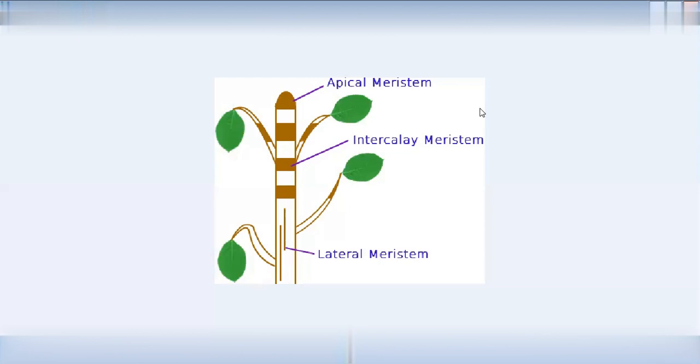The meristematic cells have characteristic features. If you want to grow the plant, you need growth cells. The growth cells are in the apical meristem. So there are types of meristem.